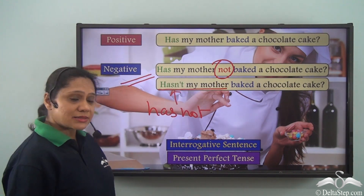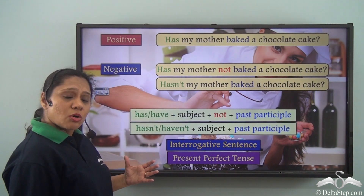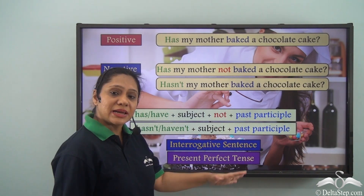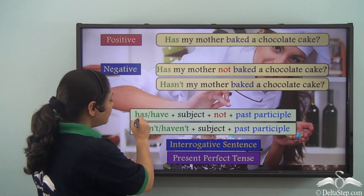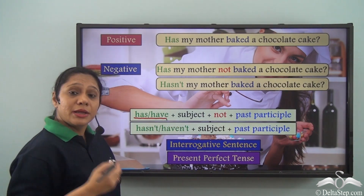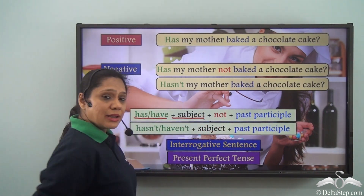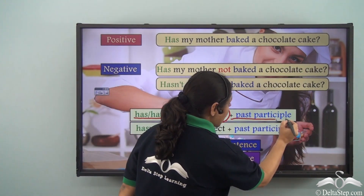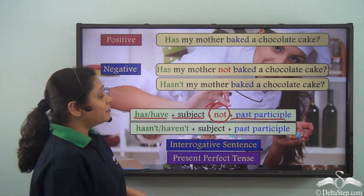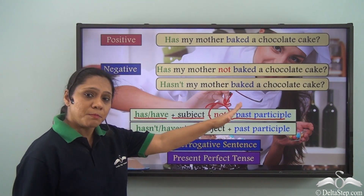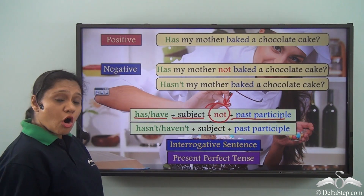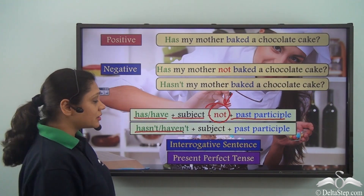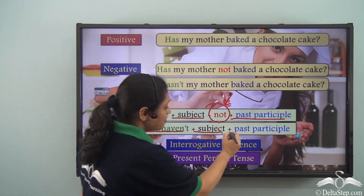So negative interrogative sentences portraying the present perfect tense can be written in two ways. We can either write 'has' or 'have' depending on the subject, followed by the subject, followed by the negative word 'not', and then the past participle. Or we can use the contracted form to write 'hasn't' or 'haven't' followed by the subject and then the past participle.